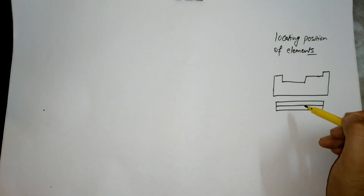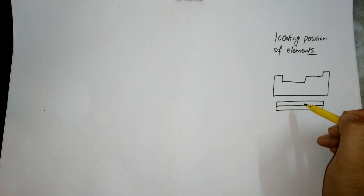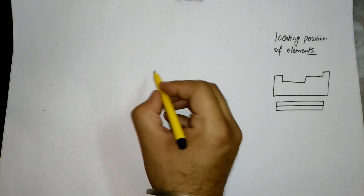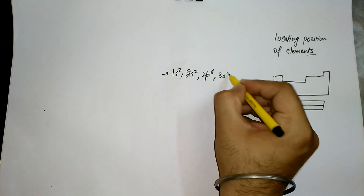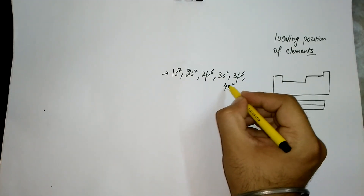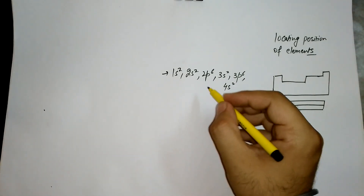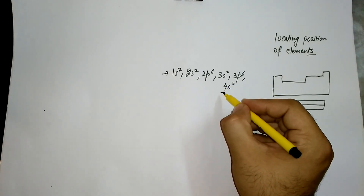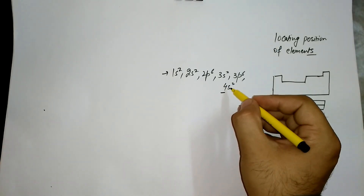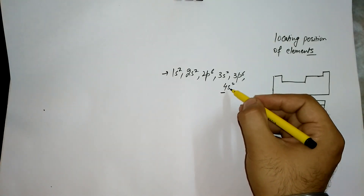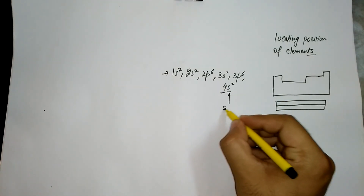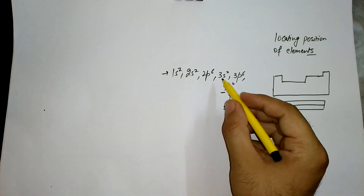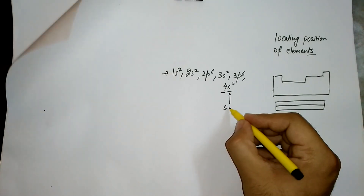Suppose a teacher gives you the configuration: 1s2 2s2 2p6 3s2 3p6 4s2. How can we predict the block? The last electron has been filled in the 4s subshell or orbital, so the element belongs to the s-block. We can say the element for which this configuration is written belongs to the s-block.